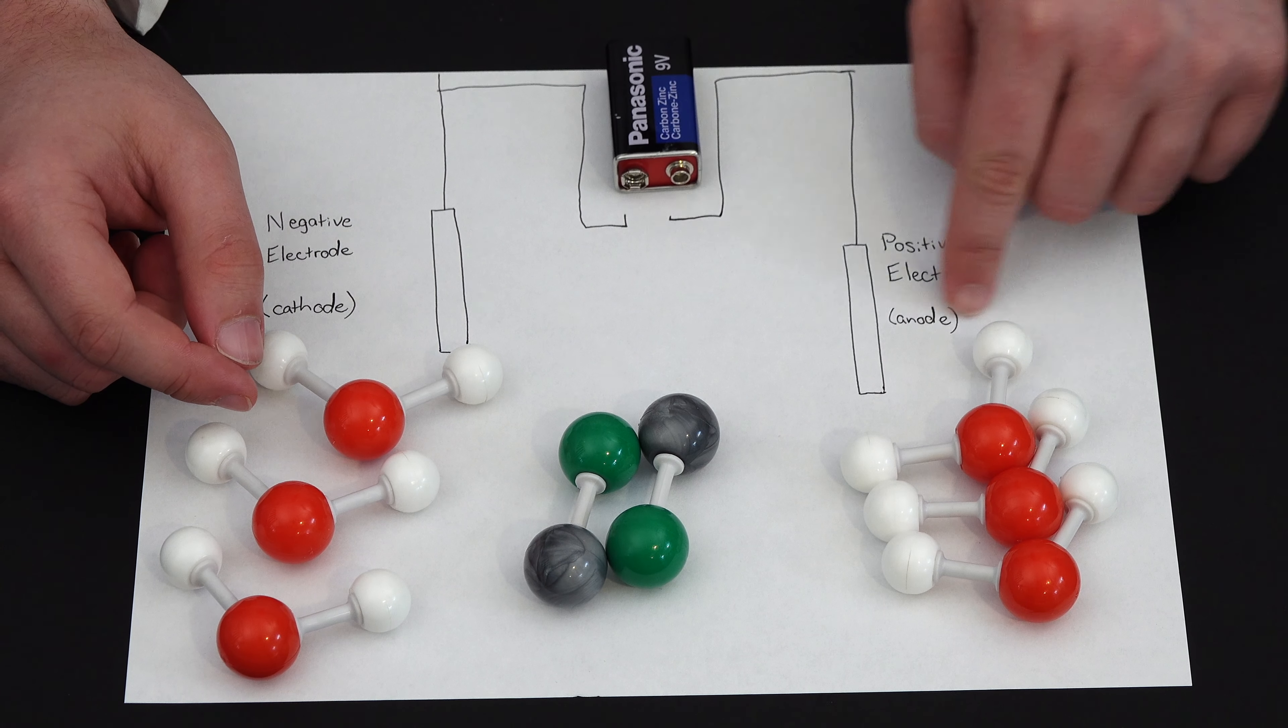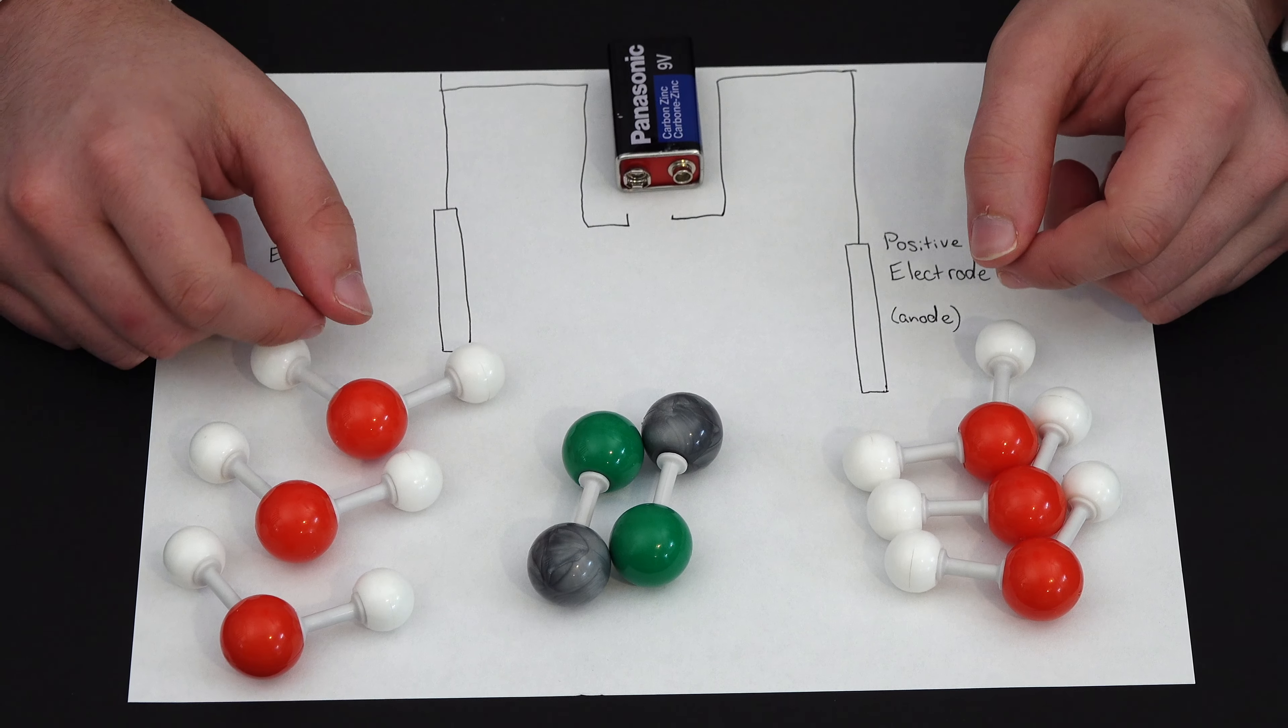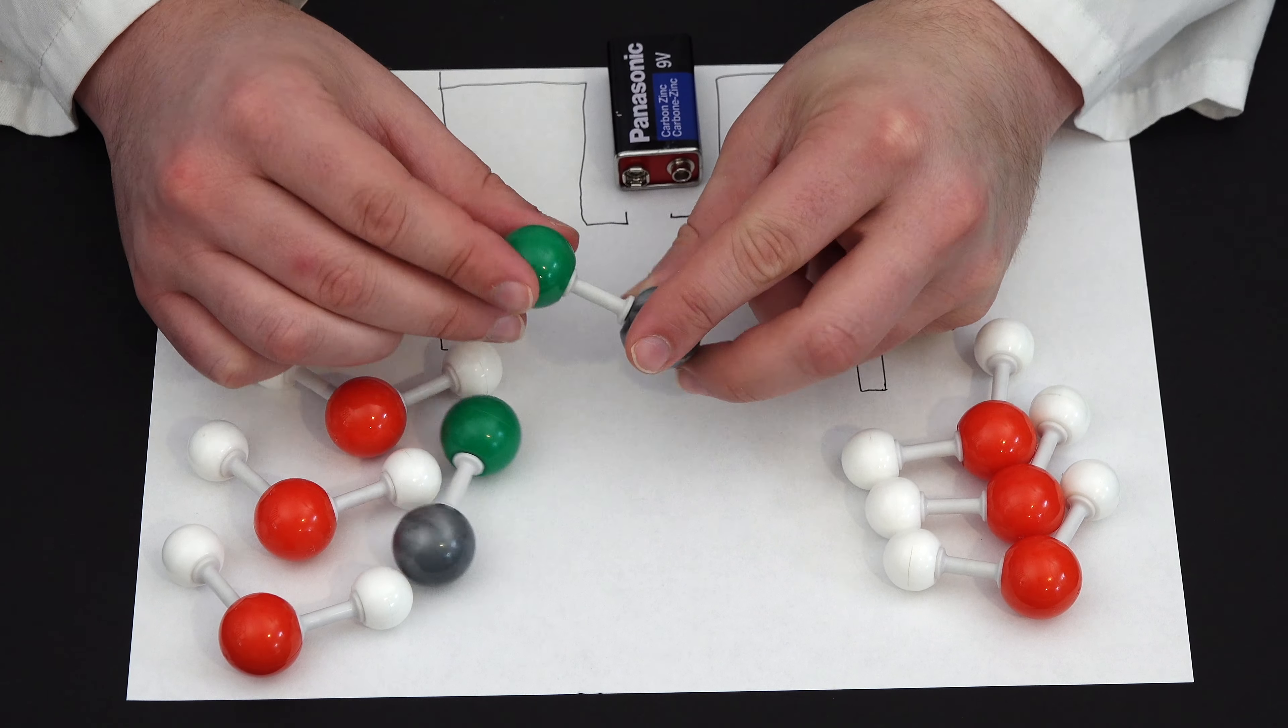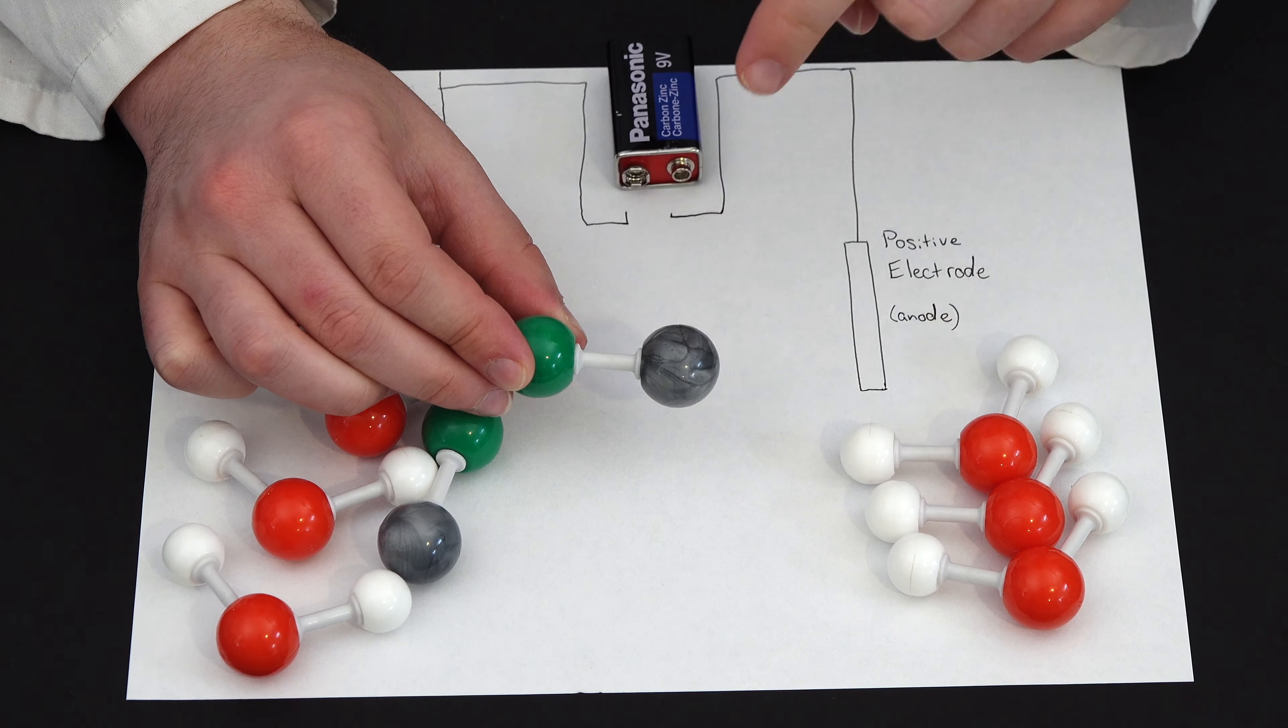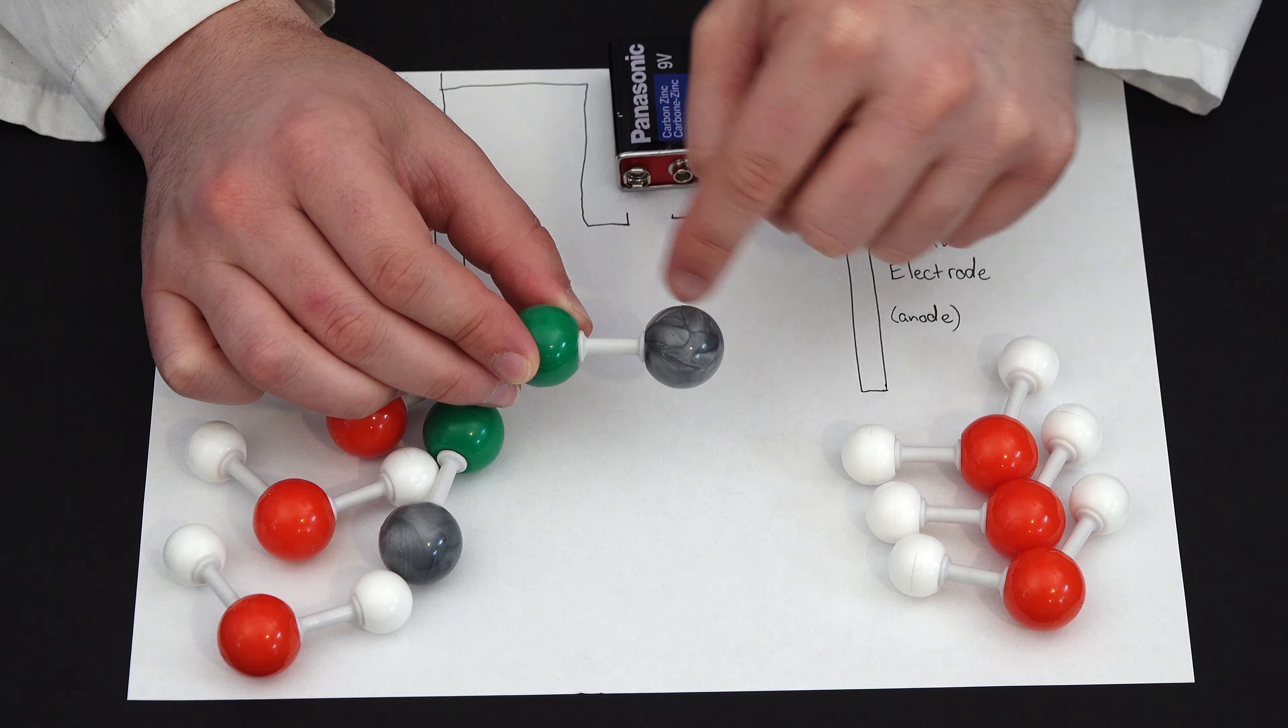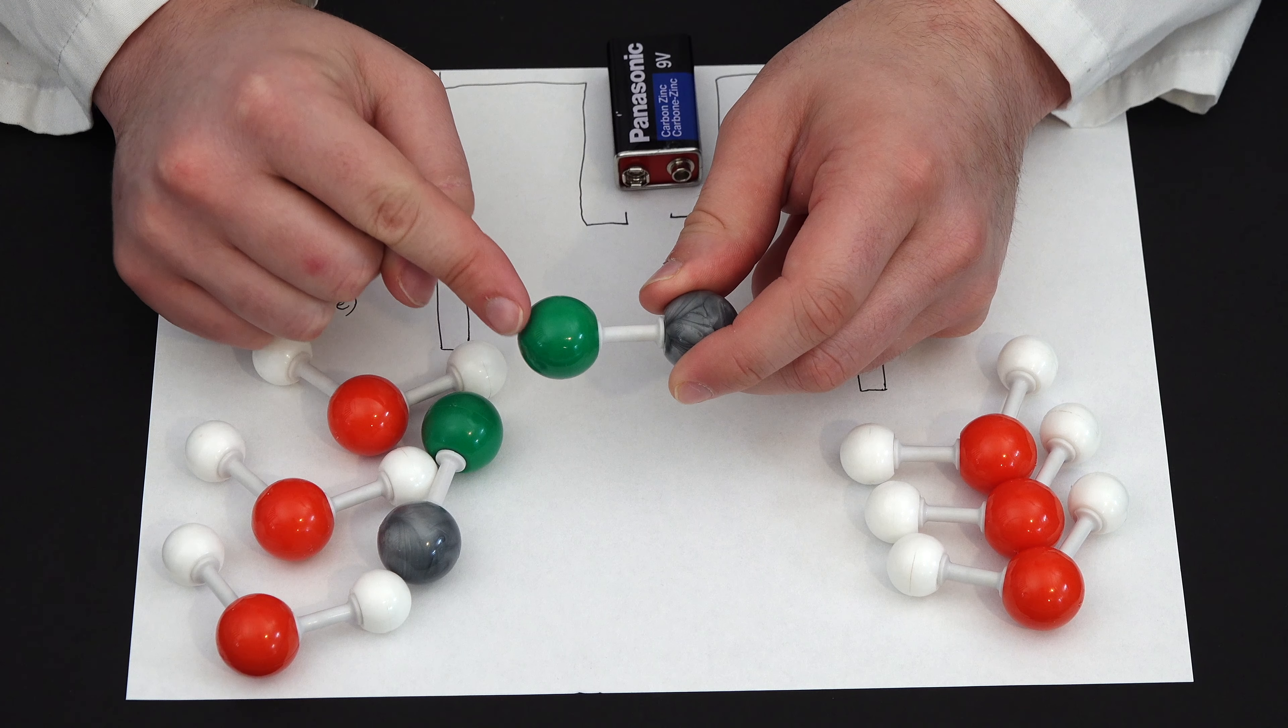And over here at the positive terminal, we are removing electrons from something. So this here, this new molecule, this is sodium chloride. So I'm just going to say the grey one will be our metal, so that's sodium, and green is our chlorine.